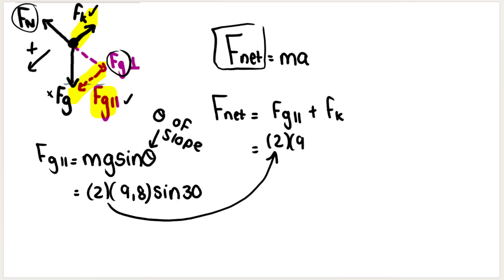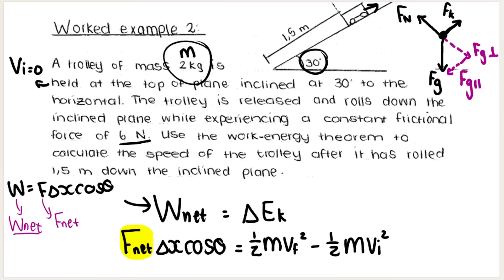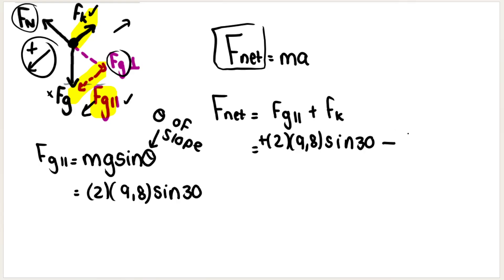My slope is 30, I'm going to substitute that right in. I don't have to work out what it is, I'm just going to substitute it in. And remember, because I chose down the slope as positive and Fg parallel is going down the slope, this is going to be positive. Then friction on the other hand is negative, why? Because it's going up the slope, and in my example up the slope is the negative direction. So frictional force is 6, so I'm going to subtract 6.